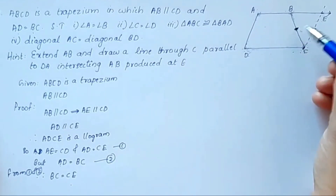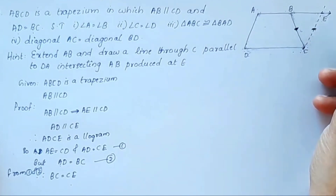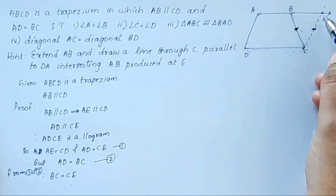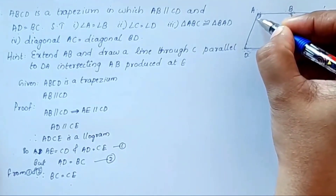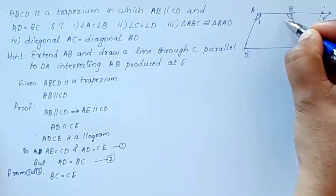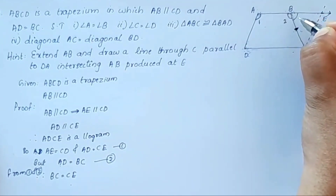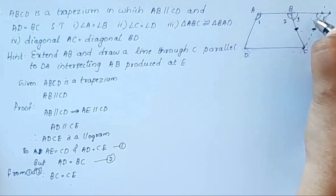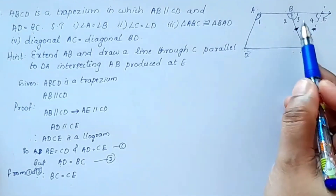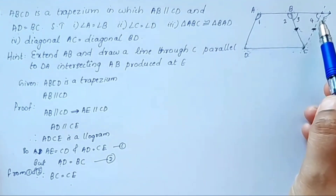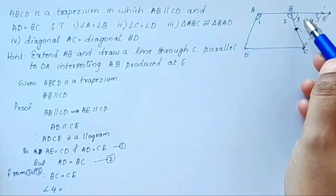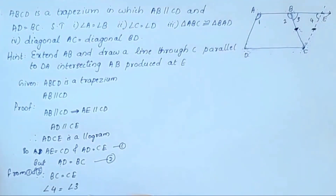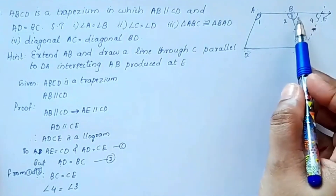We have a theorem: the angles opposite to equal sides are equal. In triangle BCE, since BC equals CE, angle 4 is equal to angle 3. The opposite angles are equal.